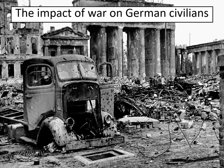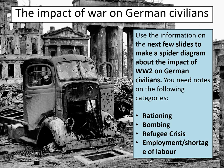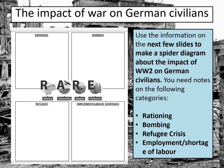Now we're going to think about the impact of the war on German civilians, covering four different areas. If you've got the sheet printed, you'll make bullet-pointed notes; if not, do a spider diagram with the same four headings. The four areas are: rationing, bombing, the refugee crisis, and jobs and the shortage of labour. It's worth remembering this using the acronym RARE — Rationing, Area bombing, Refugees, and Employment.